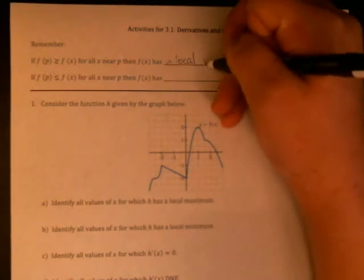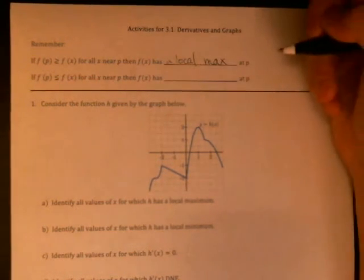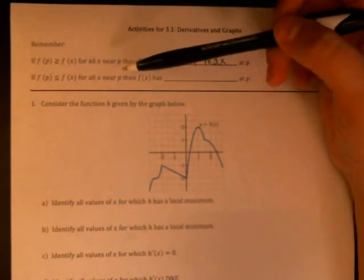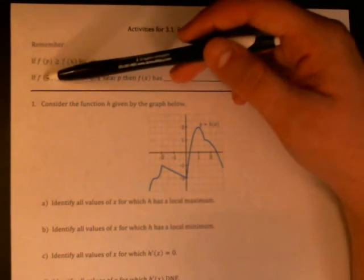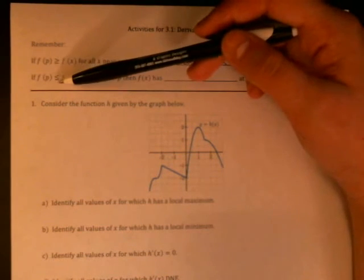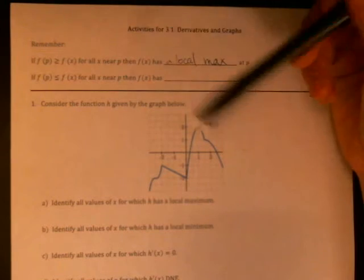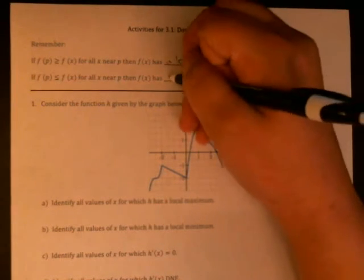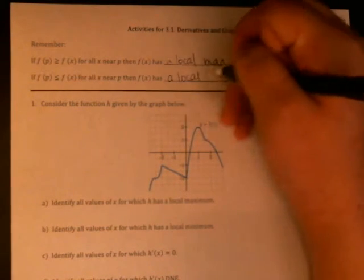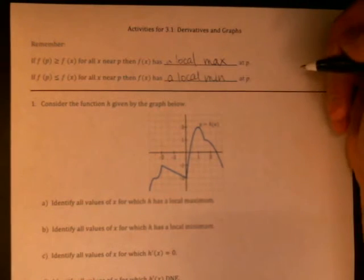And if f of p is less than or equal to f of x for all x near p, so this is saying the y value when x equals p is at least as small as all the other y values, then f of x has a local min at p.